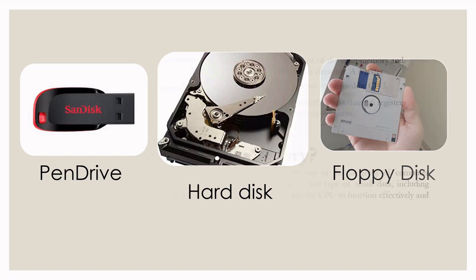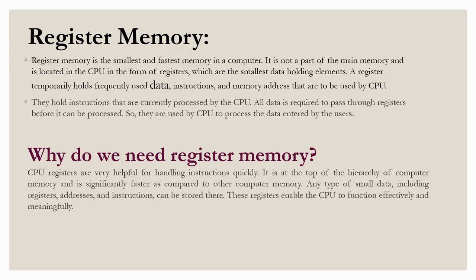Now we will move on to register memory. A register memory is the smallest and fastest memory in the computer. It is not a part of the main memory and is located in the CPU in the form of registers, which are the smallest data-holding elements. A register temporarily holds frequently used data, instructions, and memory addresses that are to be used by the CPU. They hold the instructions currently being processed by the CPU. All data is required to pass through the registers before it can be processed. They are used by the CPU to process the data entered by the user. CPU registers are very helpful for handling instructions quickly. It is at the top of the memory hierarchy and is significantly faster compared to other computer memory. Any type of small data including register addresses and instructions can be stored there. These registers enable the CPU to function effectively and meaningfully.